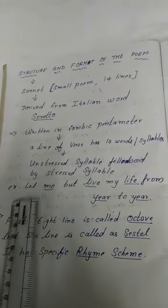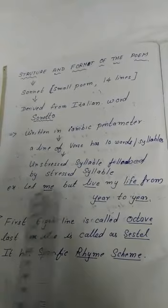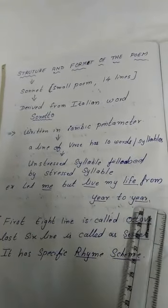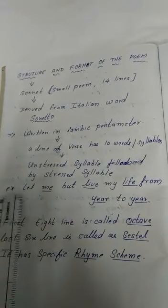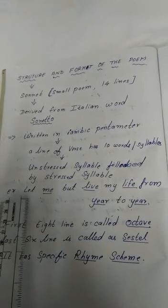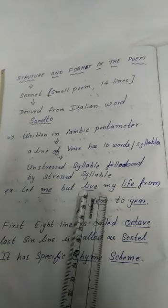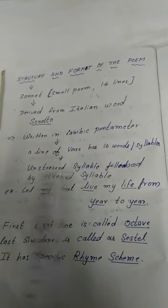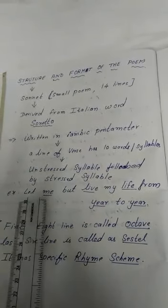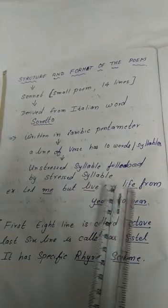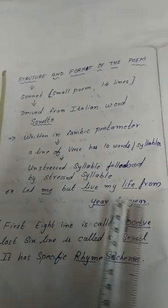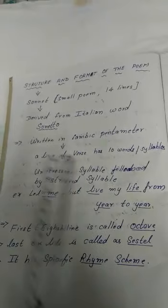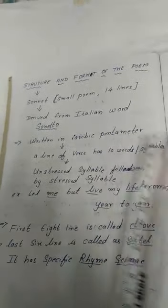Let me give an example for iambic pentameter. 'Let me but live my life from here to here.' In these words: 'let,' 'but,' 'my,' 'from,' 'to' are unstressed syllables. 'Me,' 'live,' 'life,' 'year,' 'year' are stressed syllables. So it is called iambic pentameter.